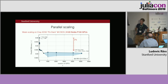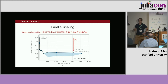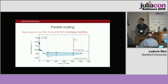When we ran it on the full Piz Daint — the Cray XC50 at the Swiss National Supercomputing Center, which used to be the third biggest supercomputer in the world — we get around 93% parallel efficiency, with the baseline at 95%, meaning we lose only 2% of parallel efficiency going from one GPU to 5,120 GPUs.